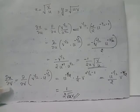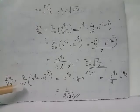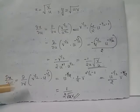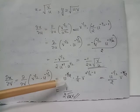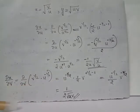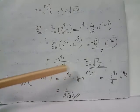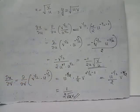∂x/∂v is evaluated by applying ∂/∂v to x = v^(1/2) · u^(-1/2), treating u as a constant. Taking u^(-1/2) outside and applying the power rule to v^(1/2), we get 1/2 · v^(-1/2). Thus ∂x/∂v = u^(-1/2) · v^(-1/2) / 2, which can be rewritten as 1/(2√(uv)).